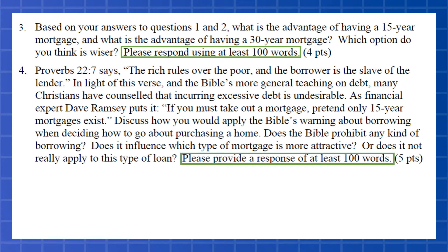Questions 3 and 4 are the last questions on Project 1 and require written responses of at least 100 words each. Discuss the pros and cons — the advantages and disadvantages — of a 30-year versus 15-year mortgage, and talk about what you think would be wiser for this family.